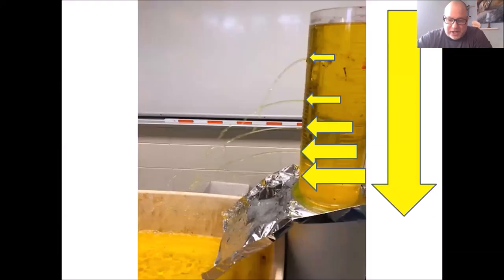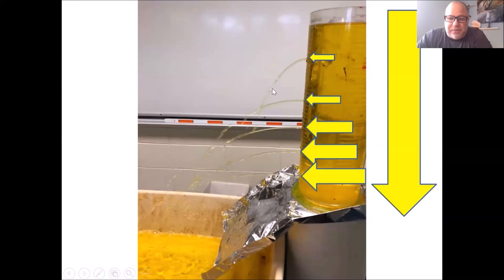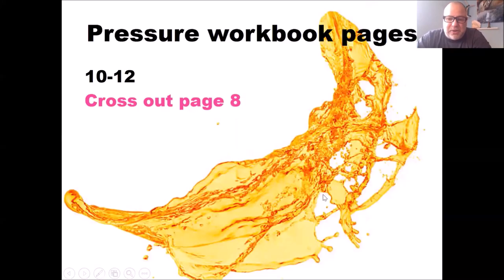Here's a zoomed-in view. At the top hole, there's low pressure because only a few water molecules are pushing down. Further down, there's tremendously more pressure from all the water above — the further down you go, the more pressure, and the straighter out the whiz shoots. That's what's going on with the whizzer demo.